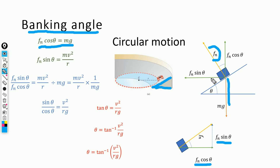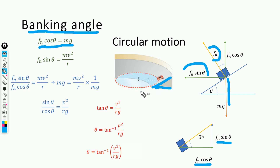The horizontal component FN sin θ is responsible for providing the centripetal force, making the car take the turn without relying only on frictional force. So we can write FN sin θ = mv²/r, for the case where we ignore frictional forces.